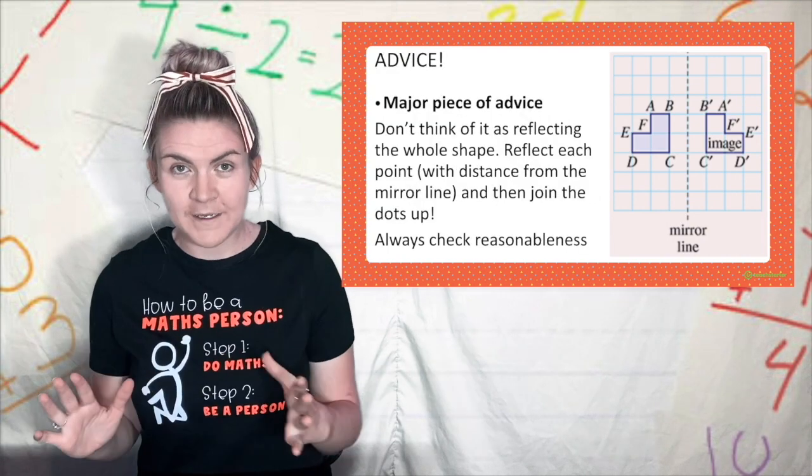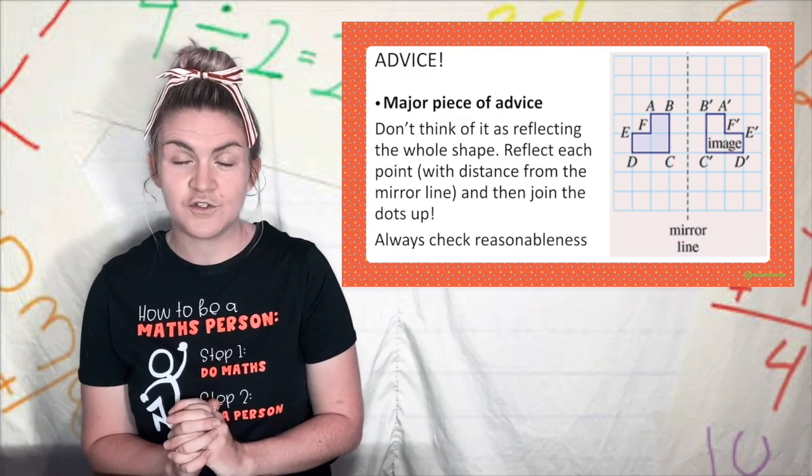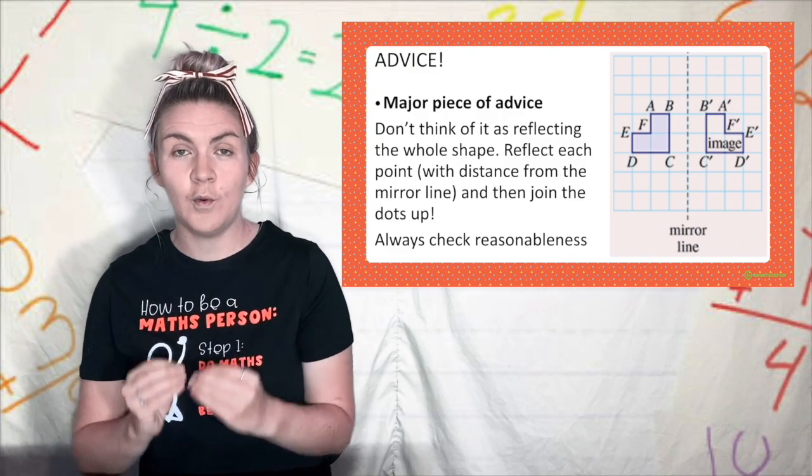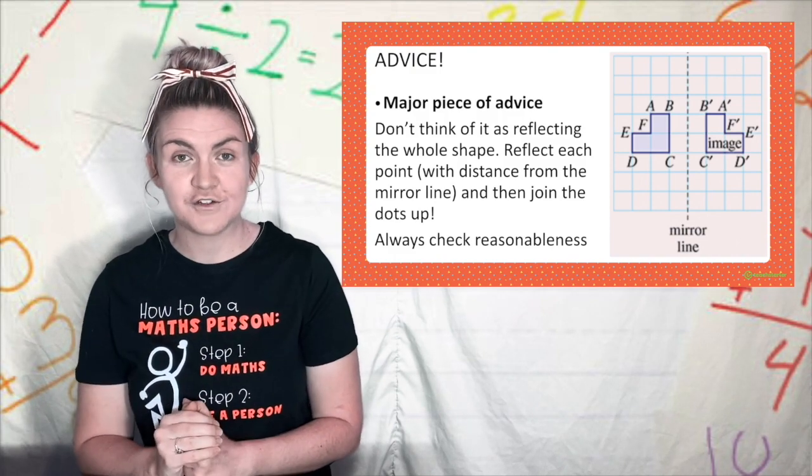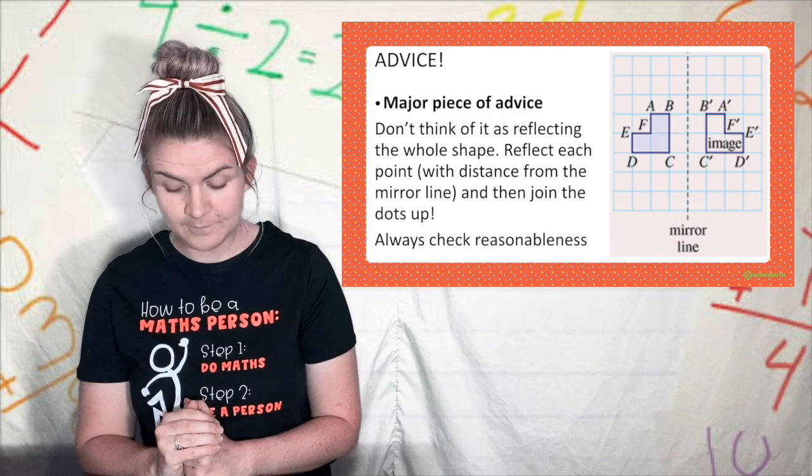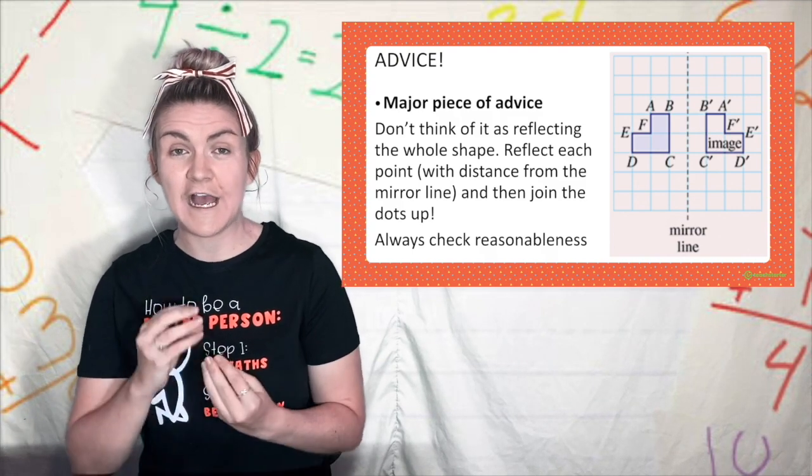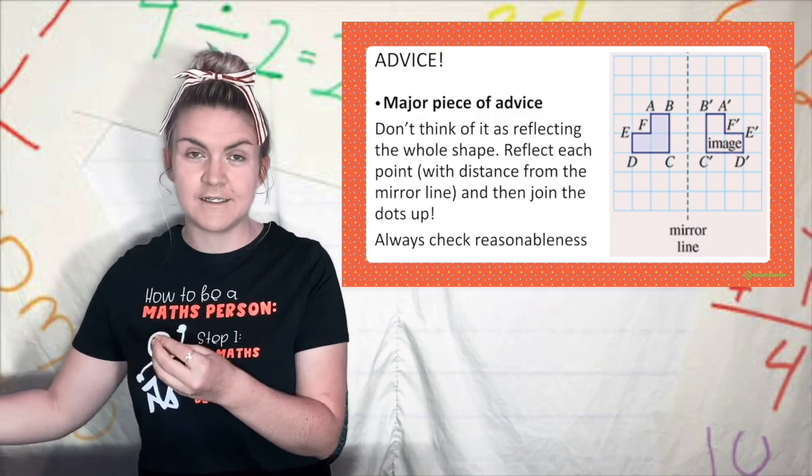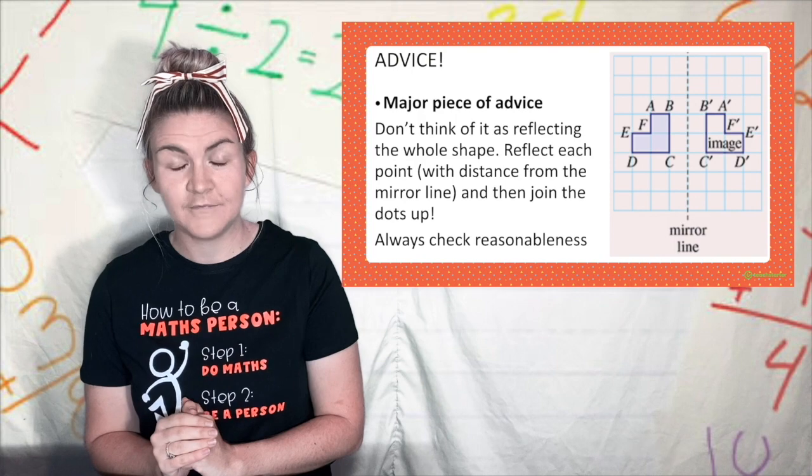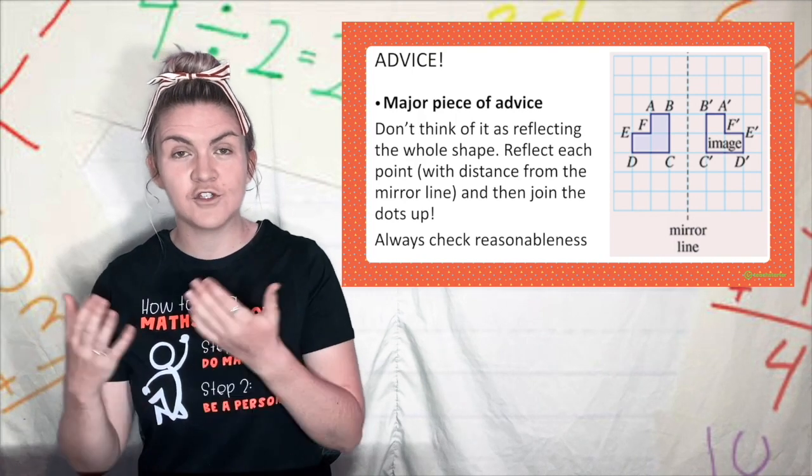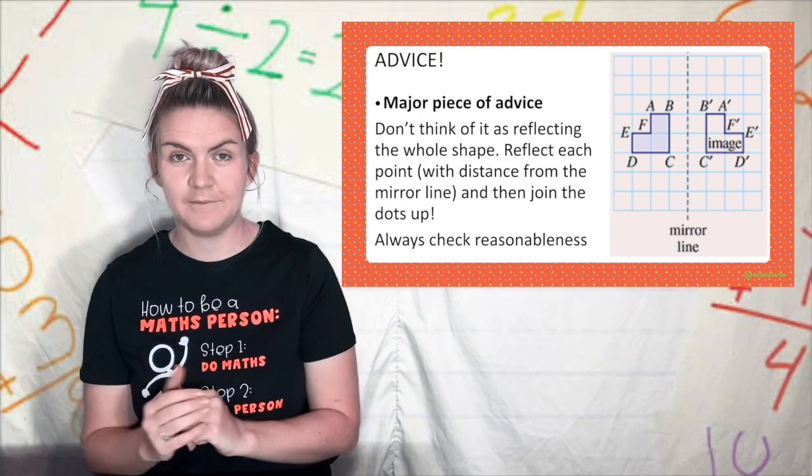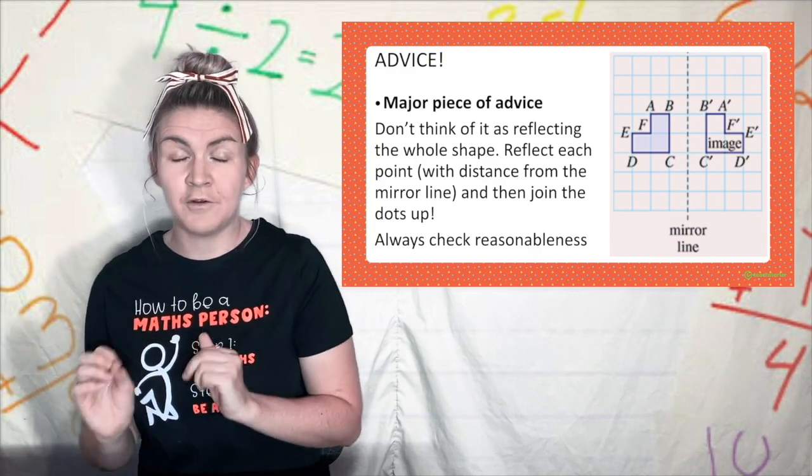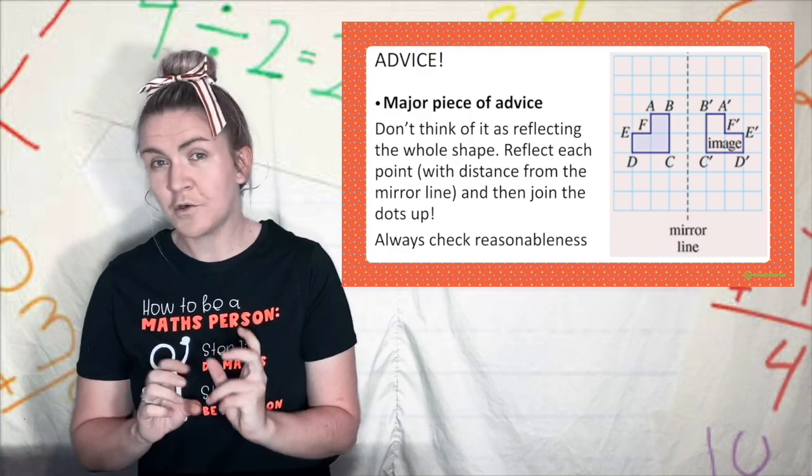Another major piece of advice that I'm always going to give you when working with transformations is always to do each transformation to a point one at a time. Don't try to transform the shape as a whole. So when we're doing reflections we just see how far away is the point from the mirror line and put it the same distance on the other side. If we do this to each point and then join up the shape we will have a reflected shape. If we try reflect the image as a whole we can sometimes put the wrong letter in the wrong spot or end up with a shape that's not fully reflected.